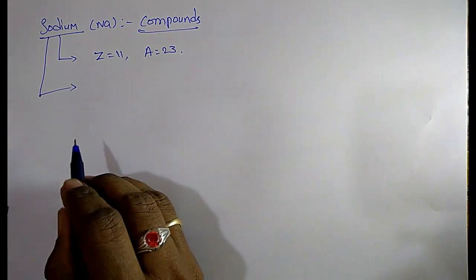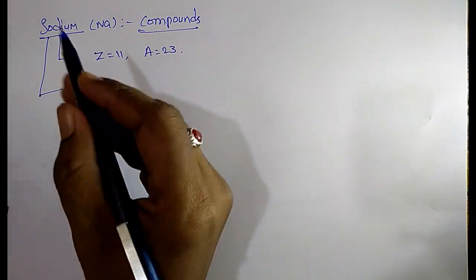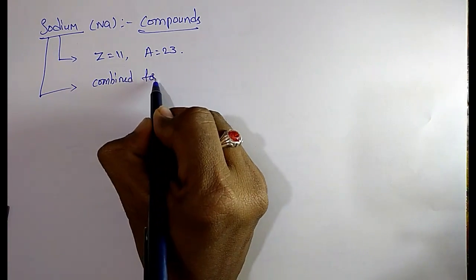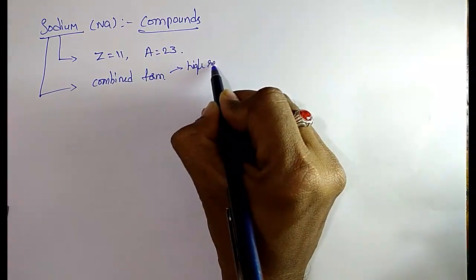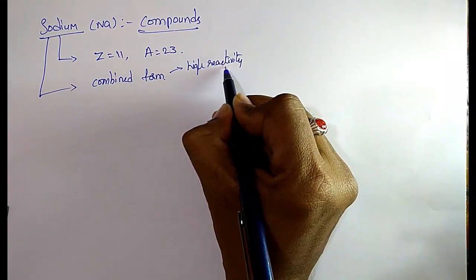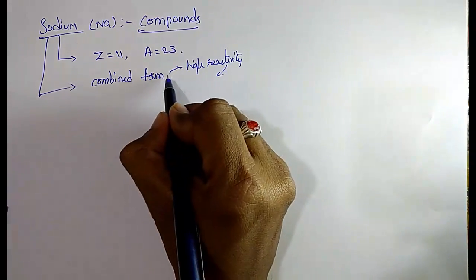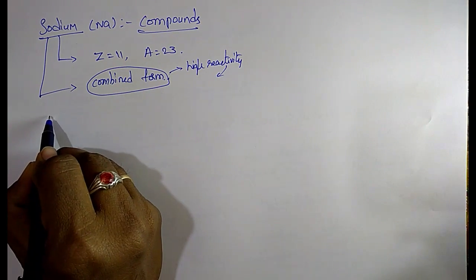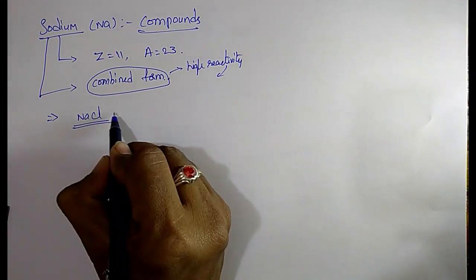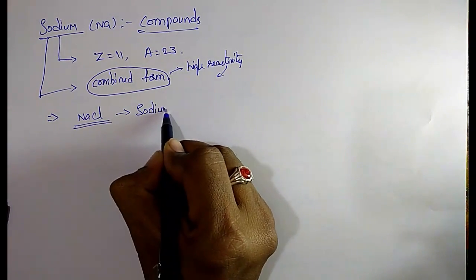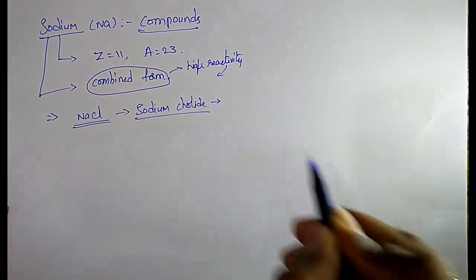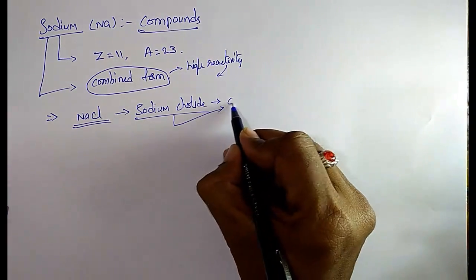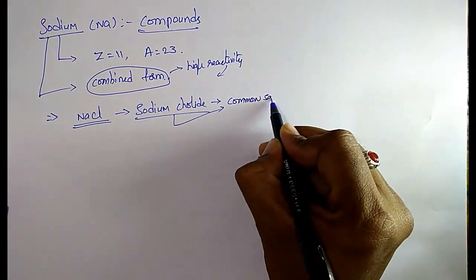Sodium comes under high reactivity material. Because of high reactivity it is always found in combined form — it always reacts with other particles. We know that the compound NaCl, that is sodium chloride, is also called common salt, rock salt, and table salt.